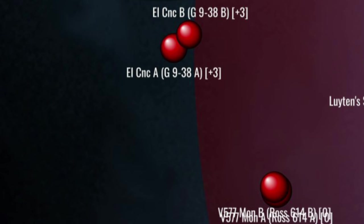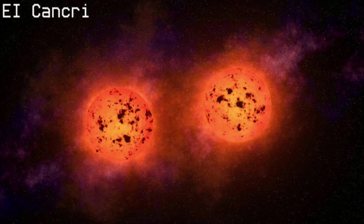Three parsecs north, we arrive at yet another flary red dwarf binary, EI Canceri. Both stars in this system are smaller than Proxima Centauri, and of spectral class M8, one rung from the bottom of the stellar ladder. The pair orbit each other every 360 years.